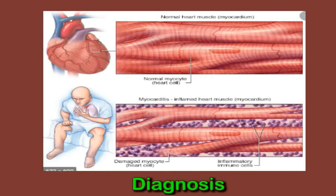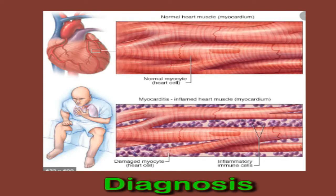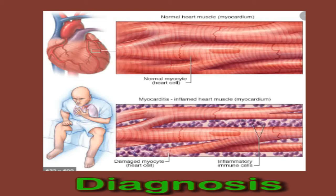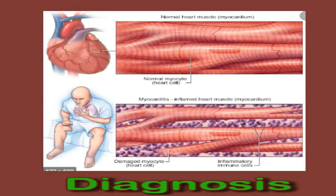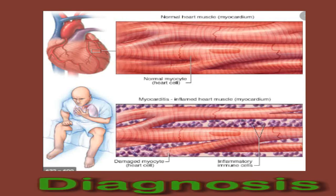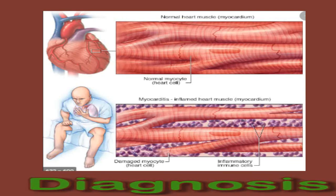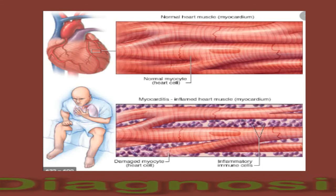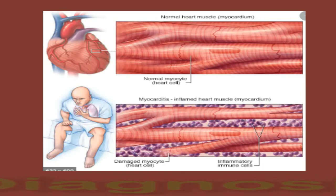Cardiac catheterization involves threading a small, thin tube through the blood vessels to examine them along with the heart. Doctors also use an electrocardiogram, or EKG, to measure the electrical activity of the heart.